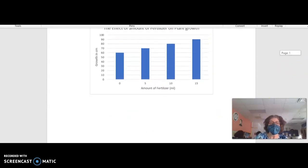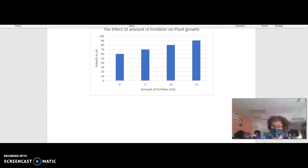So claim, evidence, and reasoning. The first thing that we write is a claim. The claim is the simplest part. With a claim, you're going to write a single sentence that explains how the IV is affecting the DV, given your graph.